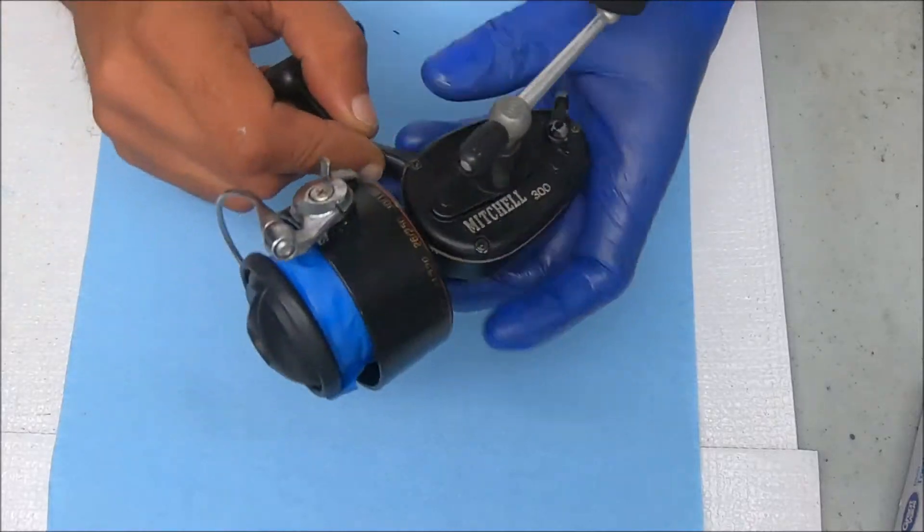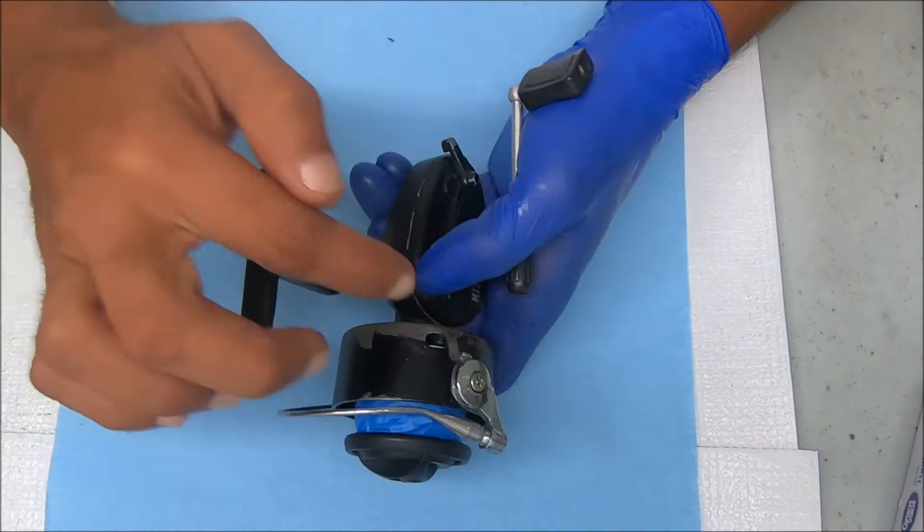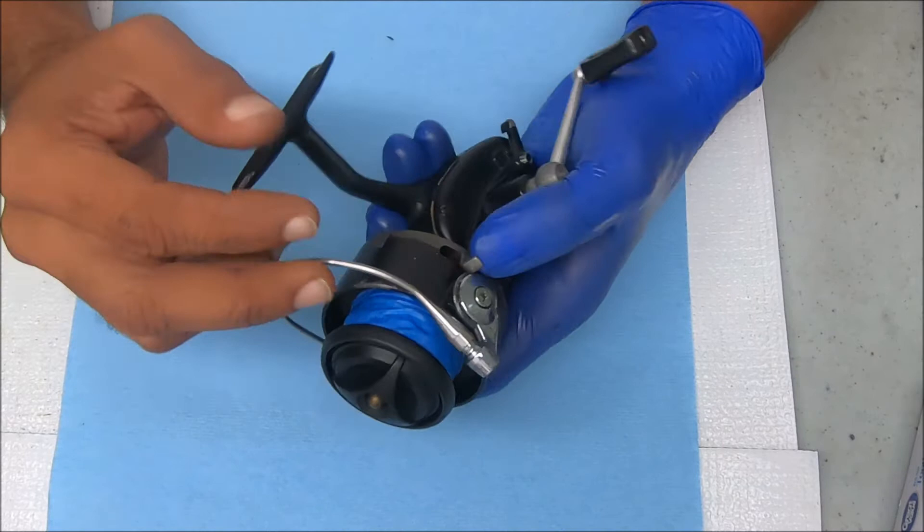Hey y'all, today we have a Mitchell 300 that is not setting the trips, and we know why because we can see that that lever is bent out so it's not fitting into that groove right there.